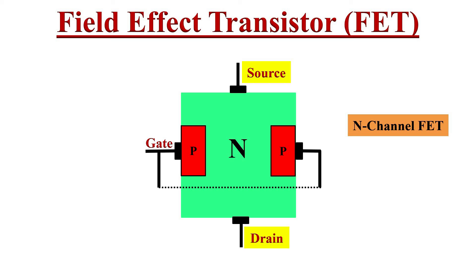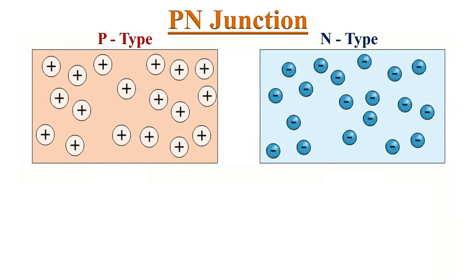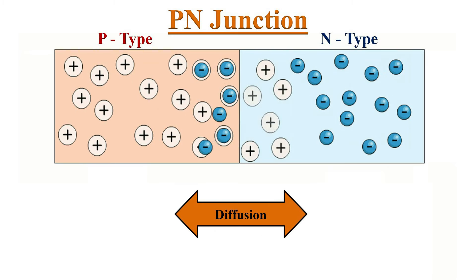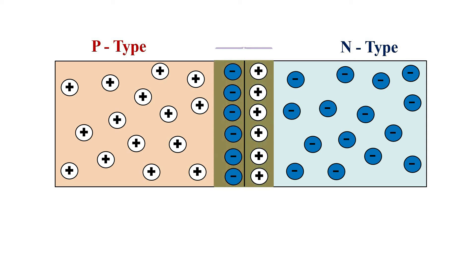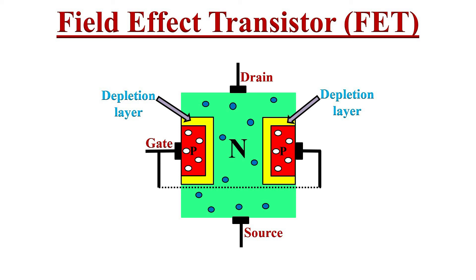The source and drain terminals are made at the two ends of the same channel. This symmetry suggests that drain and source terminals are interchangeable. The majority charge carriers in the N-channel are free electrons, and majority charge carriers in the two P regions are holes. When P and N type materials are joined together, diffusion takes place, forming a depletion region at the junction. Similarly, in a JFET, two depletion regions are formed near the two junctions.